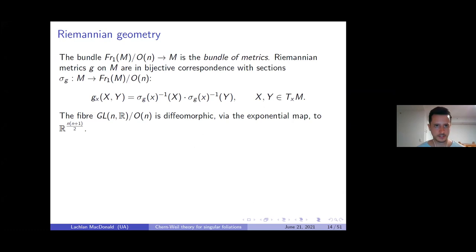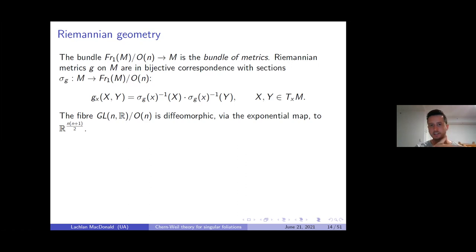Now, the arguably mysterious bundle: one-frames mod O(n). This is what Alain Connes called the bundle of metrics. The reason is that Riemannian metrics on manifold M are in bijective correspondence with sections of one-frames modulo O(n). Given such a section, evaluating at a point gives a linear isomorphism from R^n to the tangent space over x. You feed a tangent vector into its inverse, get vectors in Euclidean space, take their dot product, and this defines a Riemannian metric — and every Riemannian metric can be achieved this way.